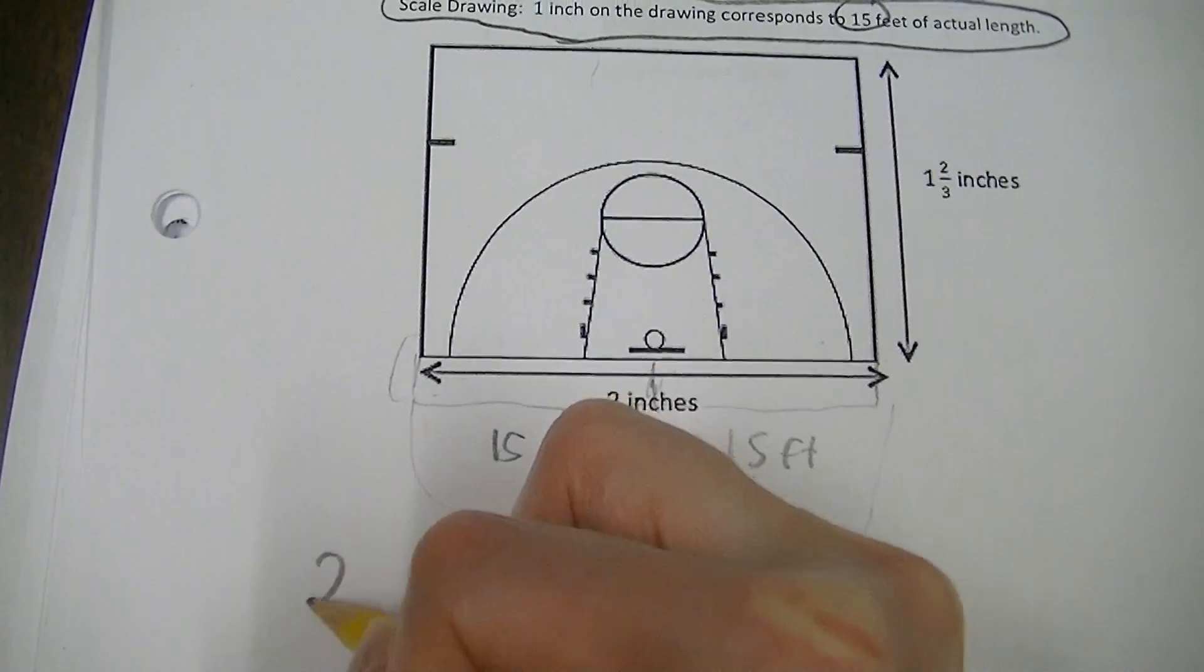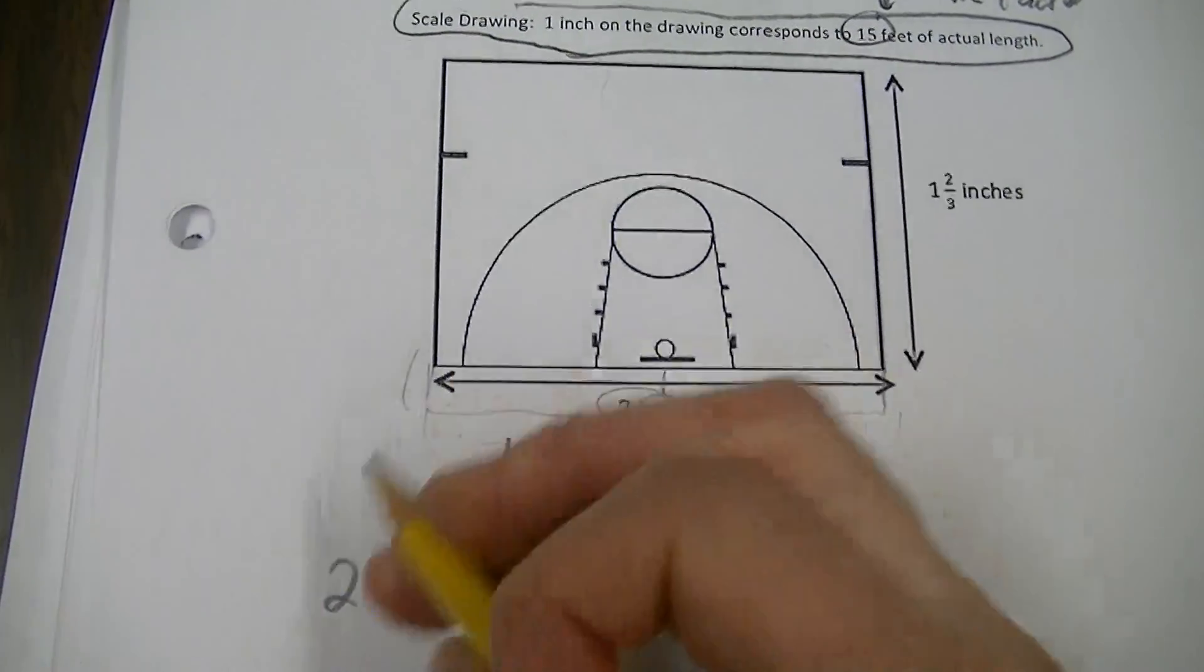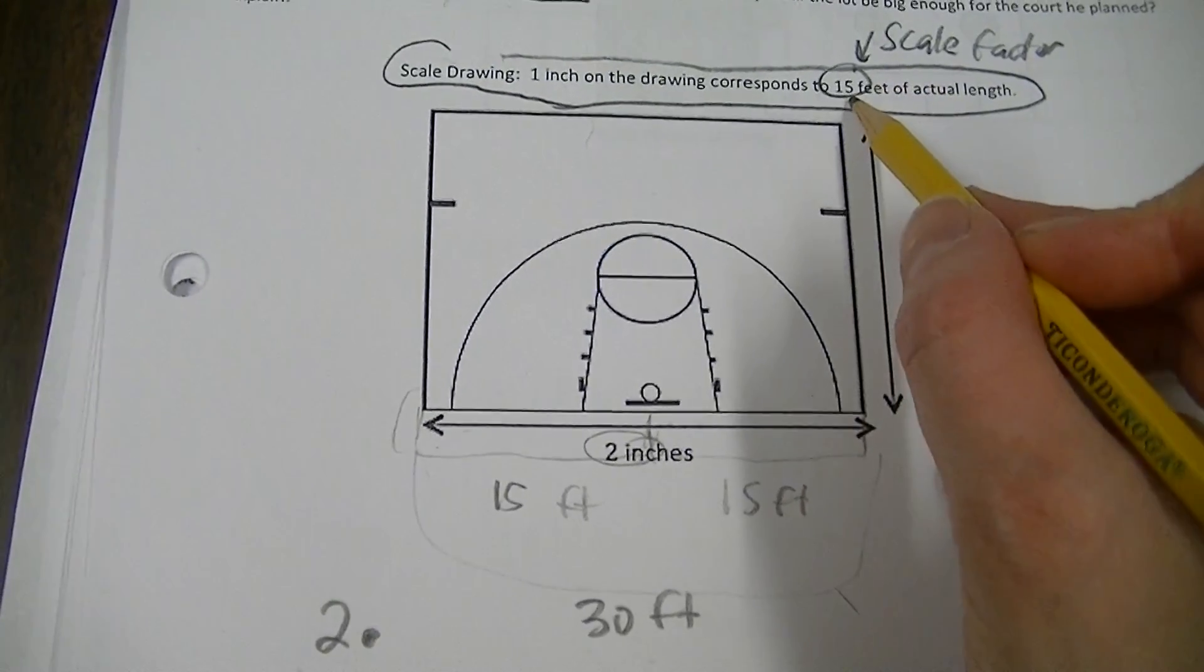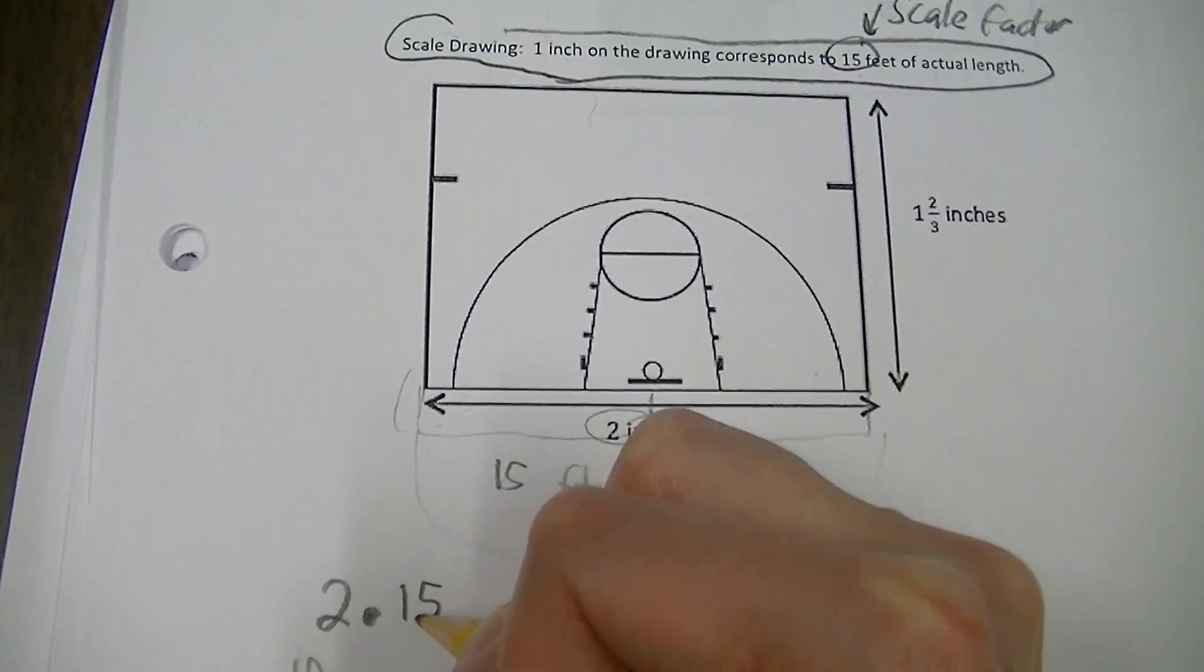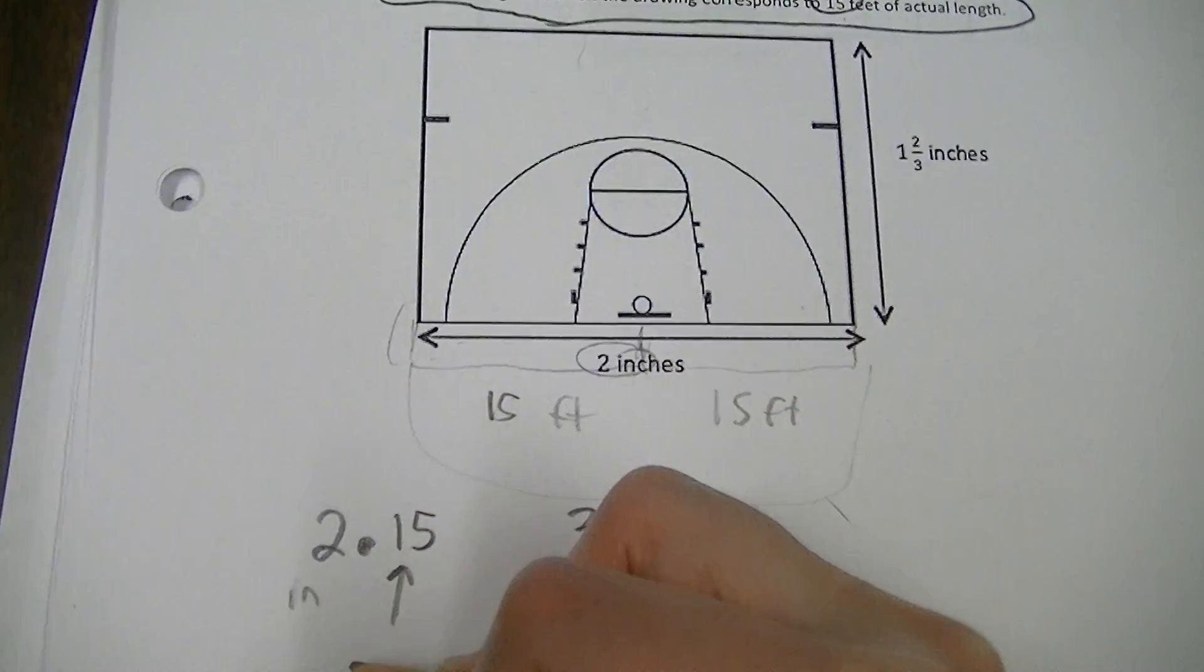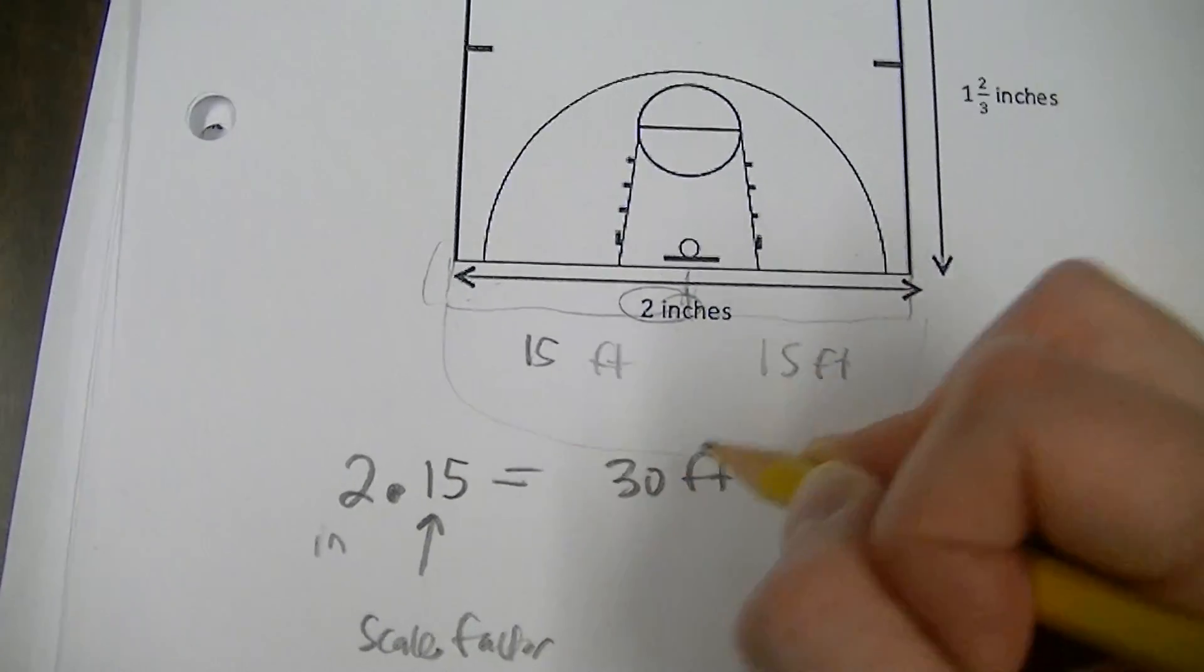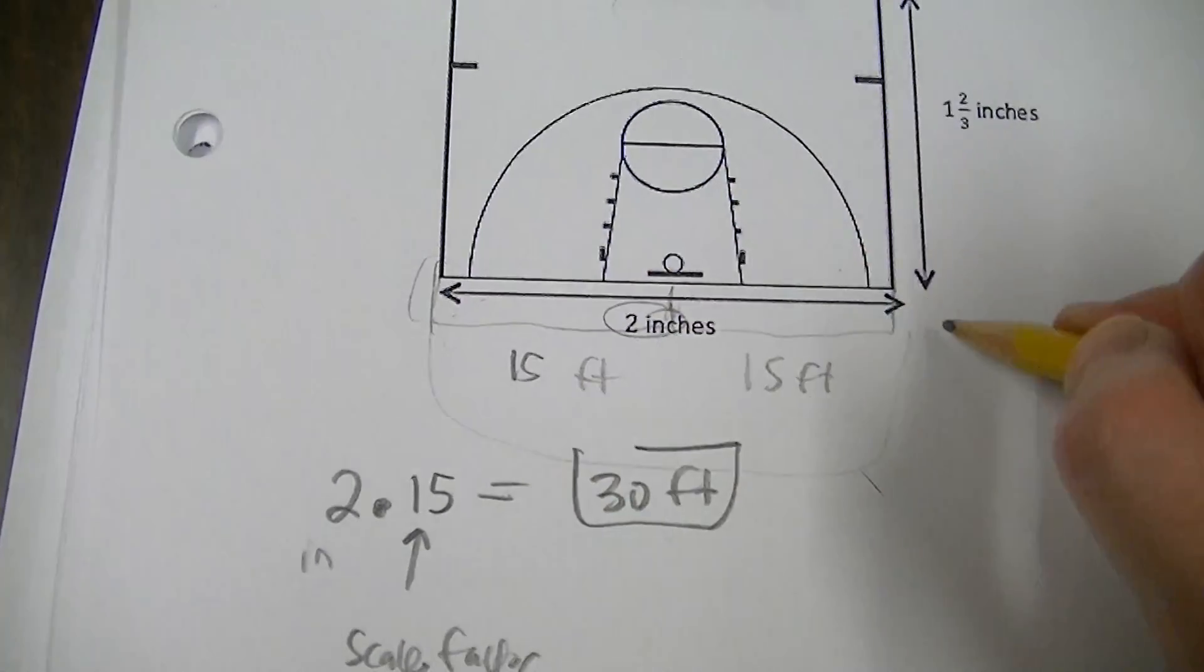Because all we did was we took that 2 and multiplied it by the scale factor. Okay, so we basically went 2, because it's 2 inches, multiplied by the scale factor of 15. And you know that would be an enlargement because the scale factor is larger than 1. And that's how we got 30 feet for this length from here to here, okay?